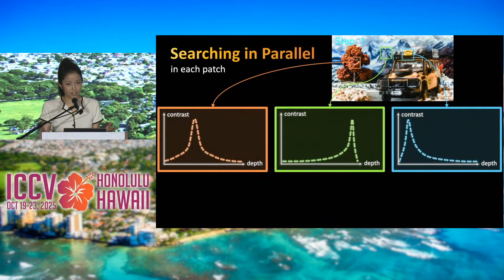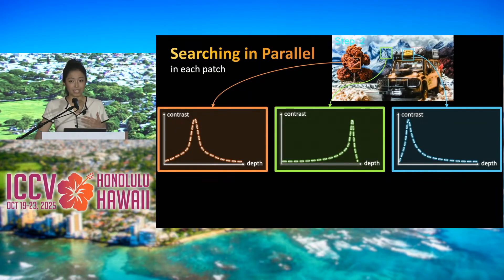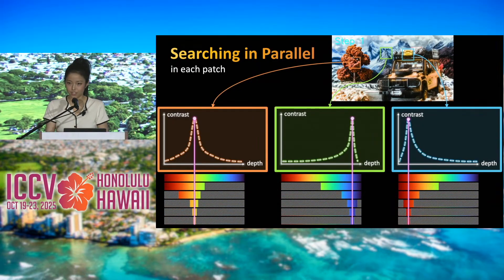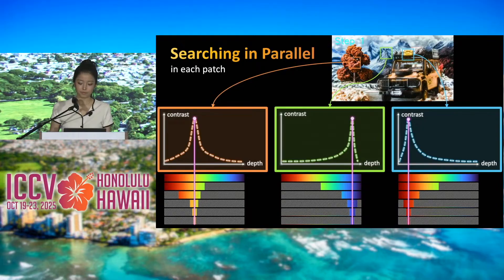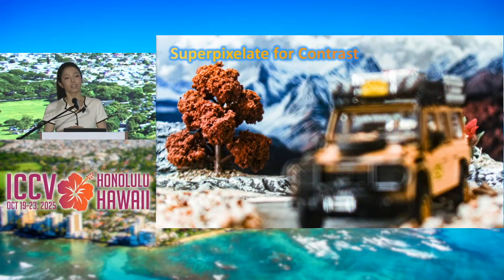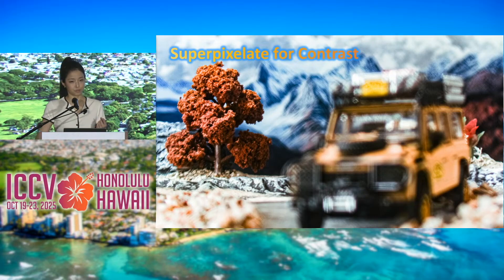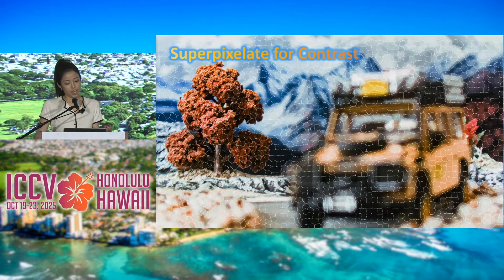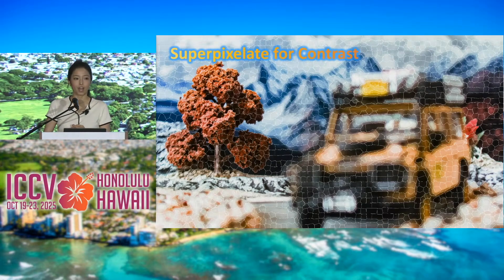We can apply this search strategy in parallel, with each pixel choosing its own independent path to identify the focus location at which peak contrast is achieved. Since contrast must be computed over a local area, we use superpixels — superpixelating the image and computing contrast within each superpixel. Superpixels are also useful at depth edges, which often overlap with texture edges.